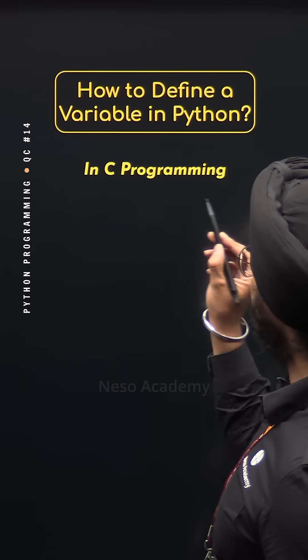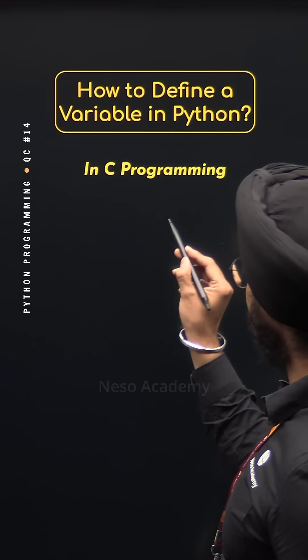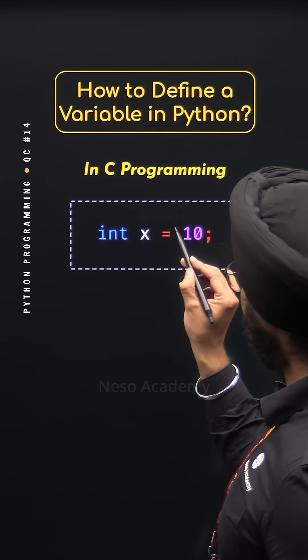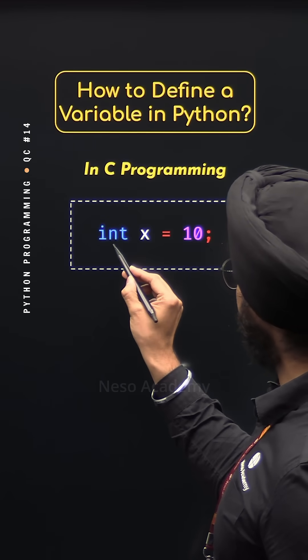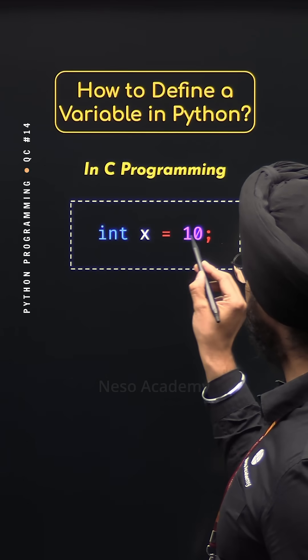In C programming, this is how we can define and initialize a variable. Here we have defined variable x which is of type integer and we have assigned it the value 10.